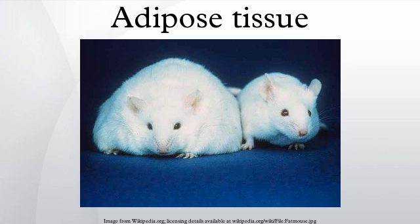Mice have eight major adipose depots, four of which are within the abdominal cavity. The paired gonadal depots are attached to the uterus and ovaries in females and the epididymis and testes in males. The paired retroperitoneal depots are found along the dorsal wall of the abdomen, surrounding the kidney, and when massive, extend into the pelvis. The mesenteric depot forms a glue-like web that supports the intestines, and the omental depot when massive extends into the ventral abdomen.